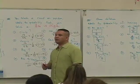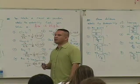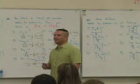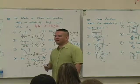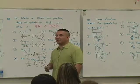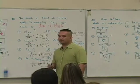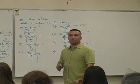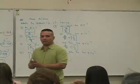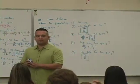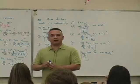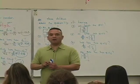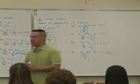Does anybody ever tell you, like, you can have no more than two cookies before dinner? You can't have a lot of cookies before dinner. So no more than two means two is the max. You guys okay with this? Anybody have any questions? Okay, let's go over how to get the outcomes.